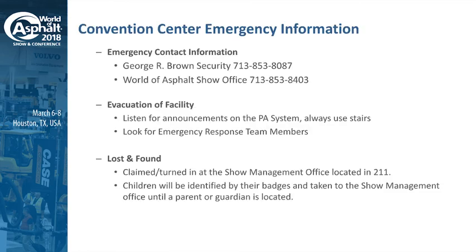I'm going to touch on operation items. We also have GES, our general contractor, on the line today. To kick things off, I wanted to review some very general convention center emergency information. Jot these numbers down — they are very important in case of emergency. If there's an emergency, start with this number: 713-853-8087, the George R. Brown Security Office. You can certainly still dial 911, but it's faster to go through their in-house security. The second number is our World of Asphalt Show Management Office — if you have any problems on the show floor, you can call us right at that number.